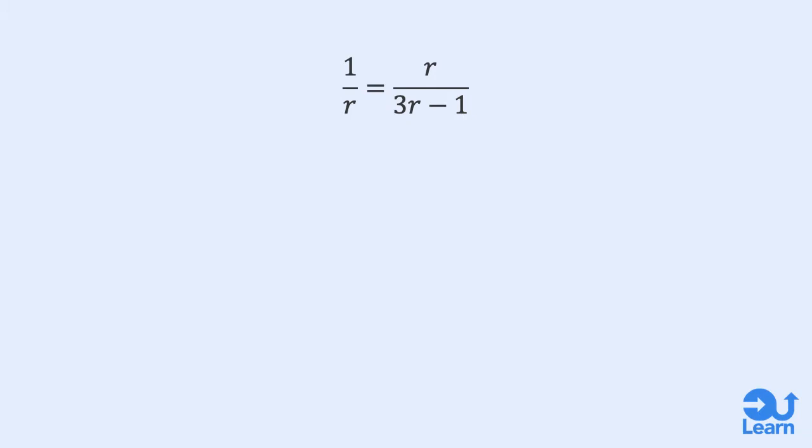We can now solve for r by rearranging the equation. Multiplying by r on both sides, then multiplying by 3r minus 1, and then subtracting 3r and adding 1 to both sides of the equal sign. We end up with this quadratic equation. Using the quadratic formula, we can solve for r.